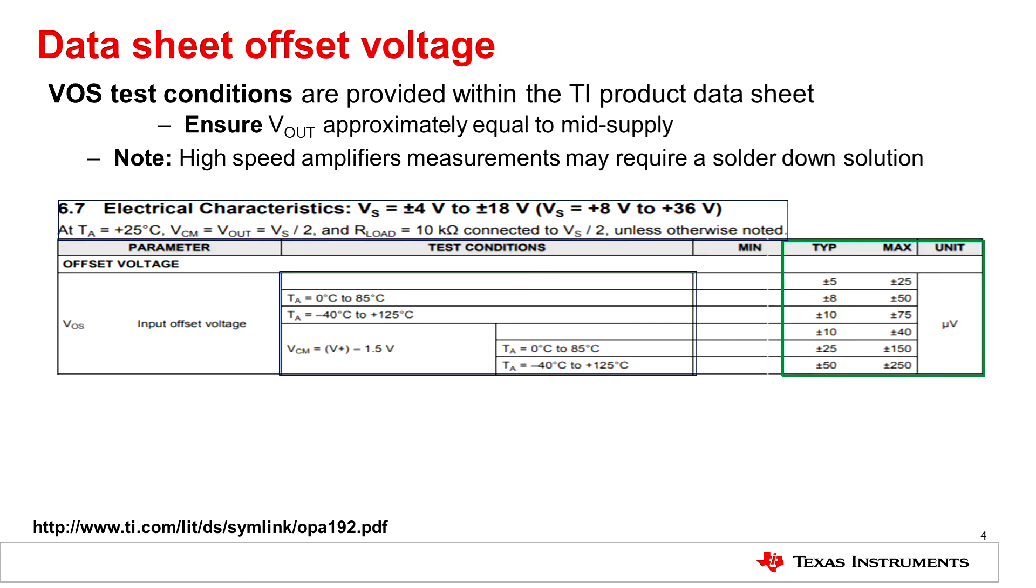Offset voltage test conditions of the OPA 192 can be found in the TI product datasheet. Remember, the TI product datasheet is located on TI.com. Ensure that the output voltage of the amplifier is approximately equal to mid-supply when testing offset of a linear amplifier.